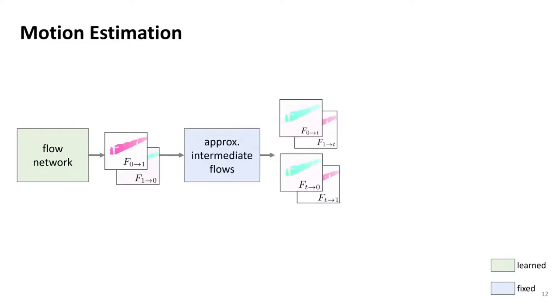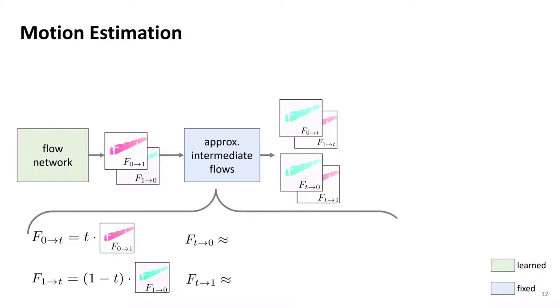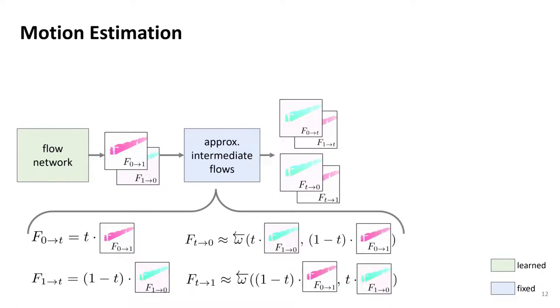However, in the end, we need the intermediate flows pointing to and from the intermediate time step t. Computing the forward flow from the input frames to the intermediate time step is easy and can be achieved by scaling the predicted flow between 0 and 1. Computing the flow for backward warping is more complex, as we need to compute the flow starting from the unknown pixel positions at the intermediate time step t. This can therefore only be done in an approximated way. We decide to not use the neural network for this, in favor of keeping the computational resources low. Instead, we approximate intermediate flow from t to 0 and t to 1 directly by warping the scaled bidirectional flows accordingly.